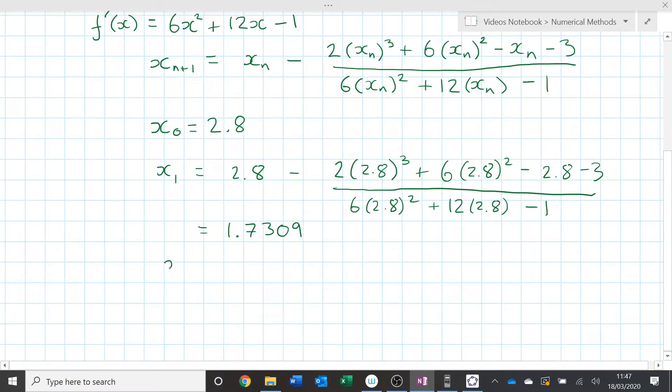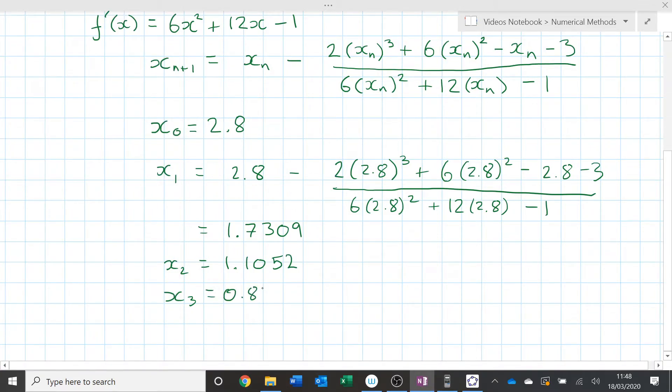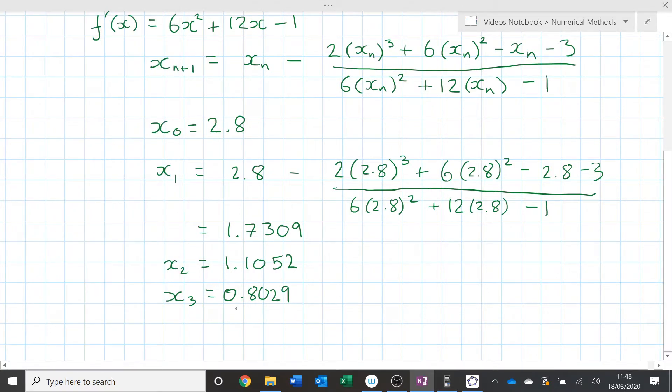1.1052. So x2 is equal to 1.1052. x3: 0.8029. 0.8029. And I could keep writing them down. Whatever the exam question says, it goes up to a certain point or something like that. Follow the instructions. Keep pressing the numbers. And I get that.